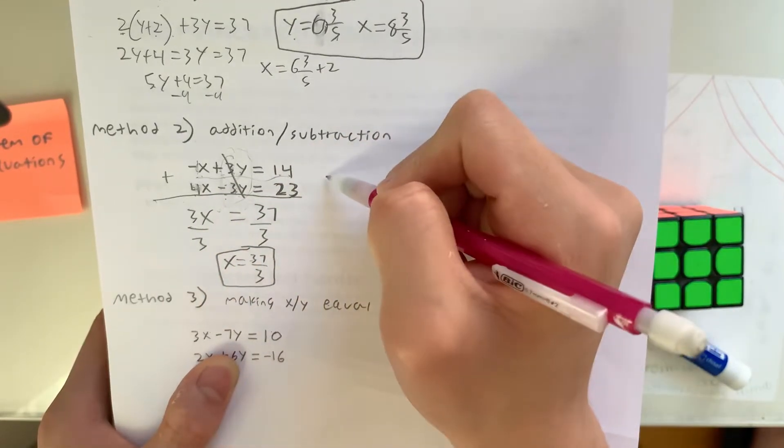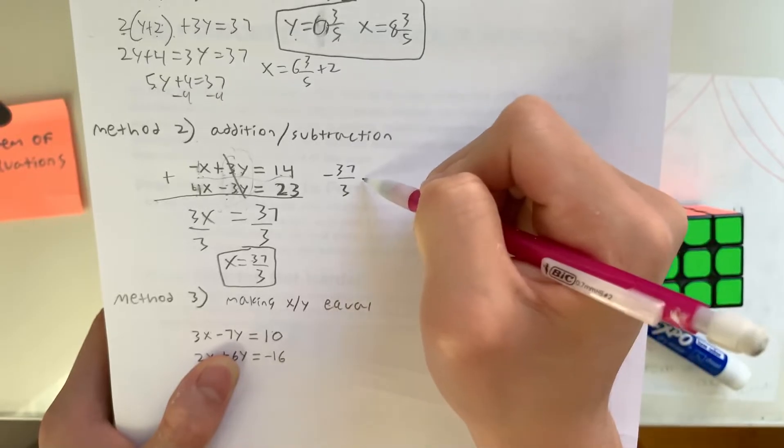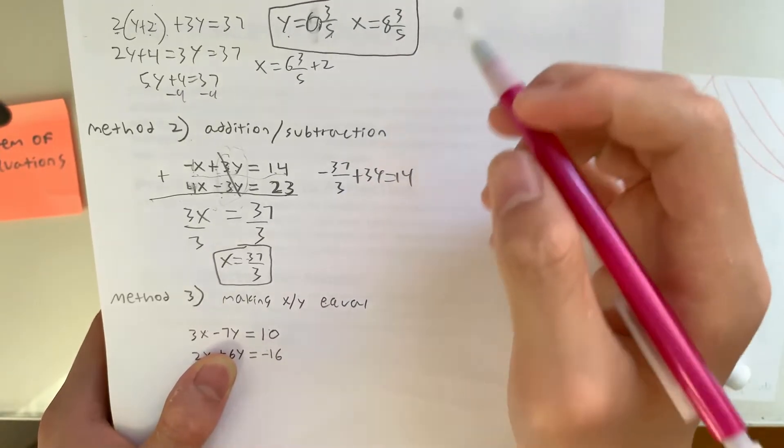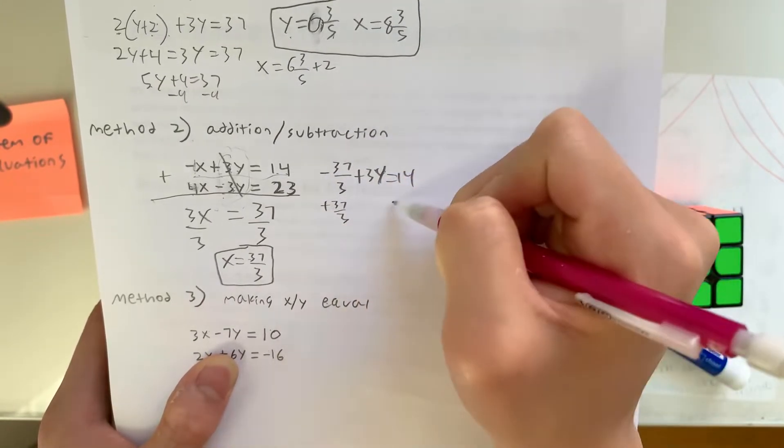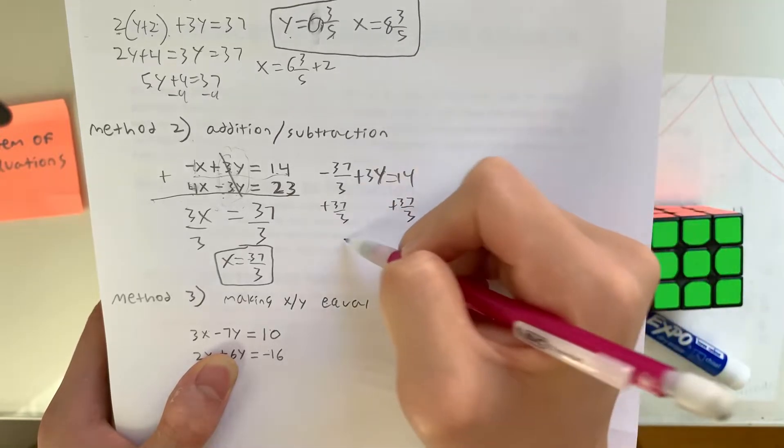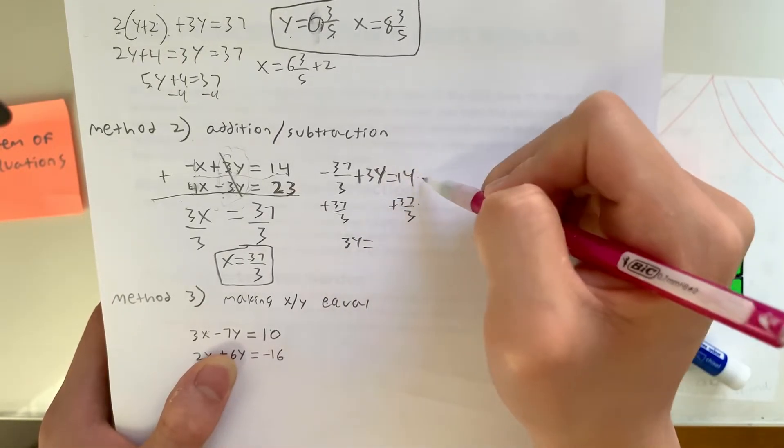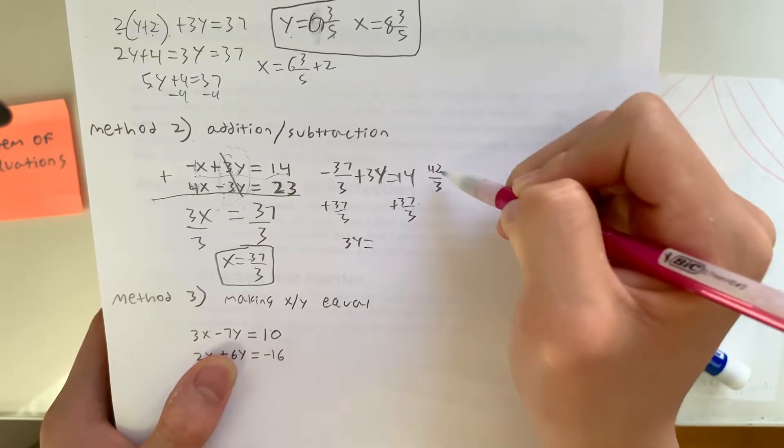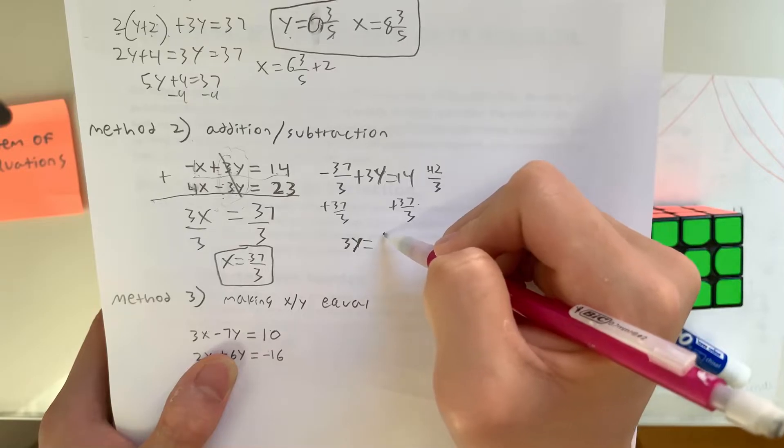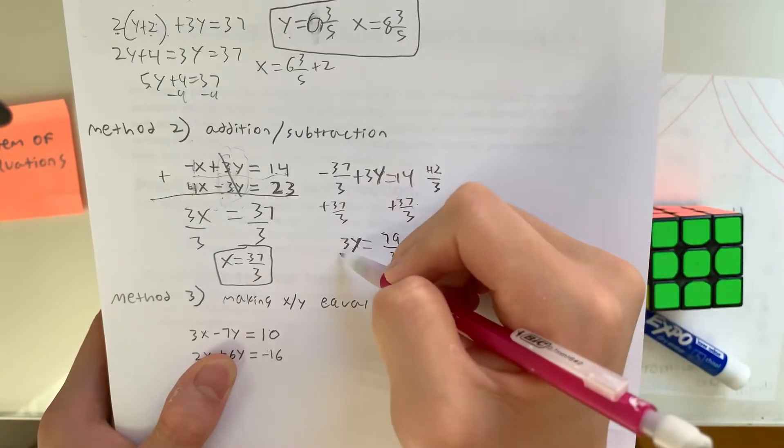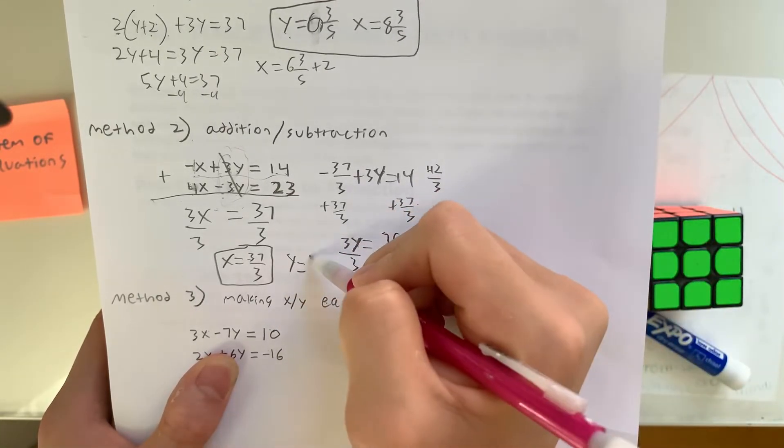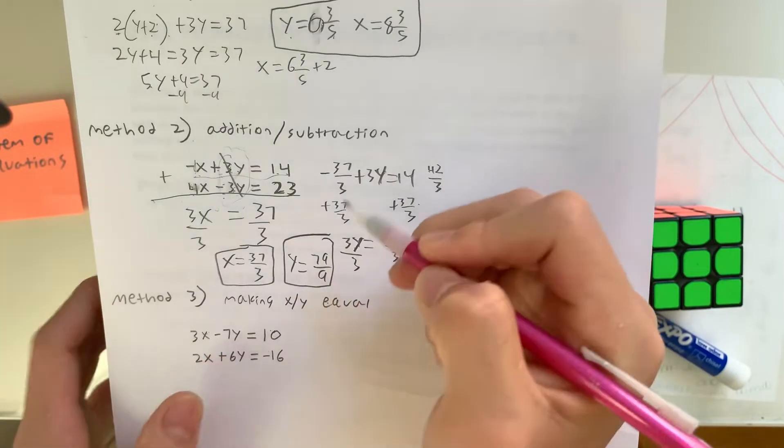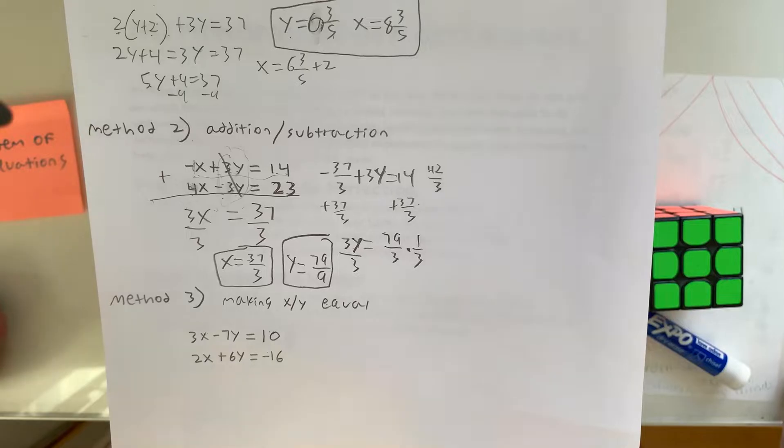And now we could just plug it back in and solve for y. So let's use this equation. Negative 37 over 3 plus 3y equals 14. Now we can add 37 over 3 on both sides, giving us 3y equals 42 over 3, meaning 3y equals 79 over 3. Divide both sides by 3, which is times 1 third, giving us y equals 79 over 9. So these are our two answers. That's how you do the addition slash subtraction method.